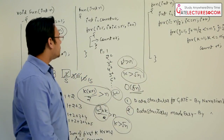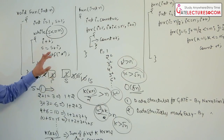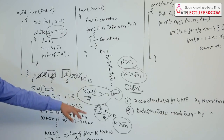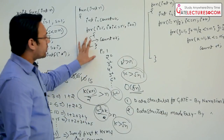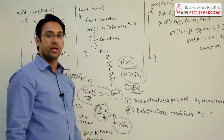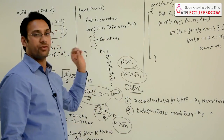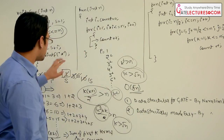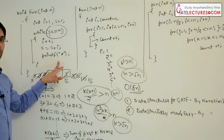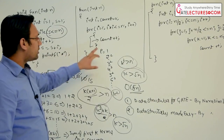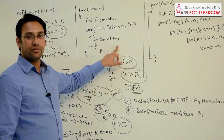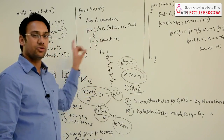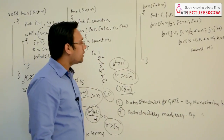In both of these cases, the loop runs at minimum √n times and at maximum √n times. Therefore we have both the omega notation and the theta notation valid. That means we can write the time complexity of these two functions as Θ(√n), because the lower bound and the upper bound are the same.